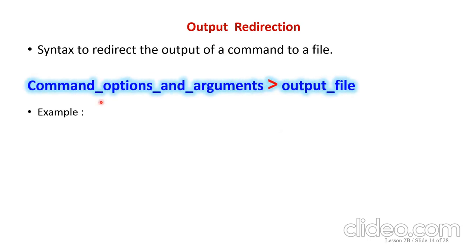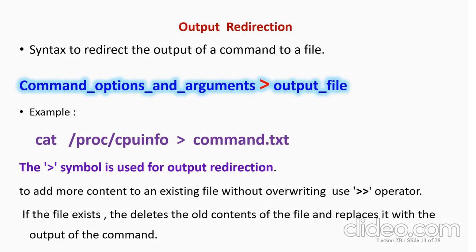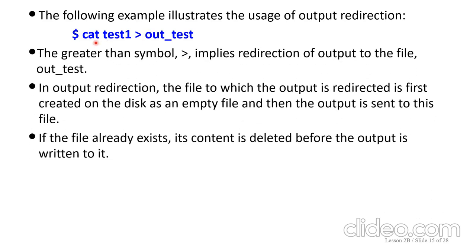Here comes the output redirection syntax. Same way. Here the greater than symbol is used for output redirection. The particular information from the cat file is being passed to the text file command.txt. Same way in this example also. Cat test1 greater than out_test means here you are going to copy that particular output to the test file instead of monitor.